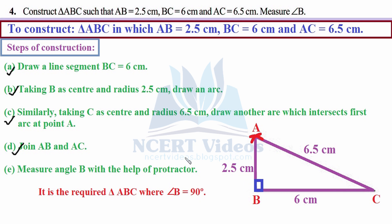Now measure angle B with a protractor: place the reference point at B and it turns out to be 90 degrees, represented by a square box. Two principles apply here: first, the sum of any two sides is greater than the third — for example, 2.5 plus 6 equals 8.5, which is greater than 6.5. Second, Pythagoras' theorem: 2.5 squared plus 6 squared equals 6.5 squared, confirming the right angle. So angle B equals 90 degrees. That is question 4.